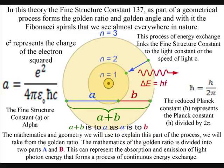The mathematics of the golden ratio is divided into two parts, A and B. This can represent the absorption and emission of light, photon energy, that forms a process of continuous energy exchange.